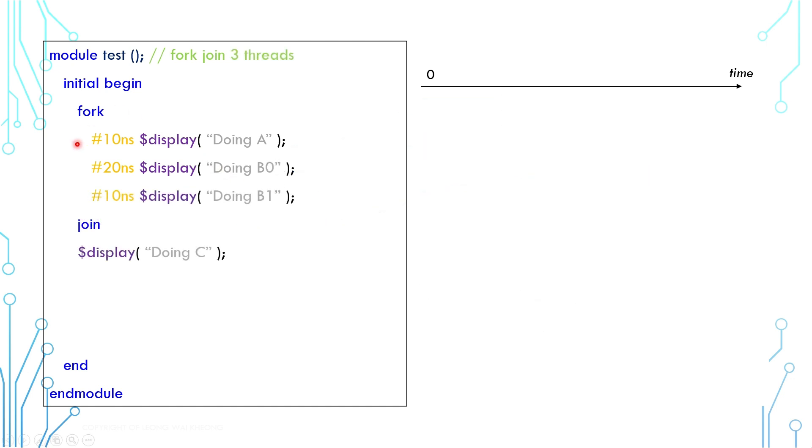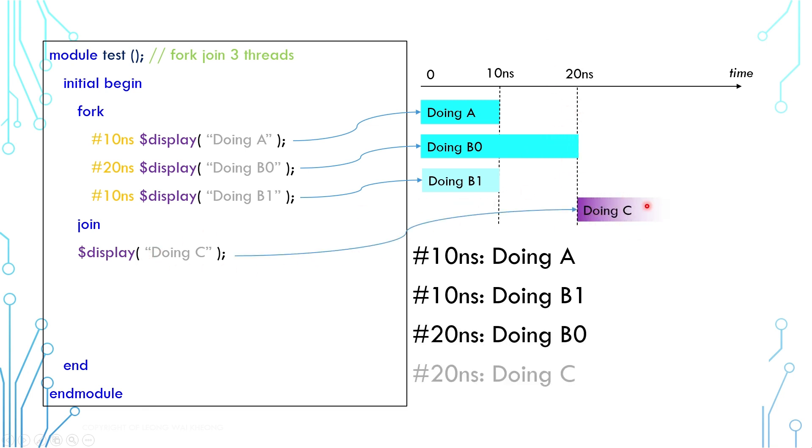This is the same code as before with the extra thread. A, B0, and B1 start at time 0. At 10 nanoseconds, A and B1 finish. At 20 nanoseconds, B0 finishes. And C begins to execute after that.